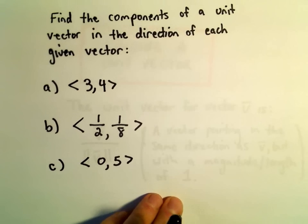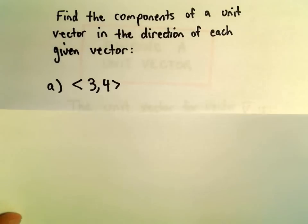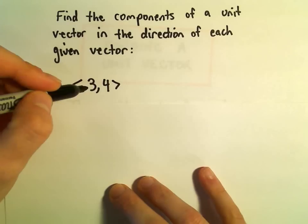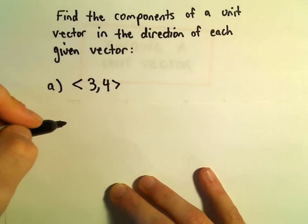We've got three examples here. Let's find the components of a unit vector in the direction of each of these given vectors. So we've got the vector with components 3, 4. Let's find its magnitude.